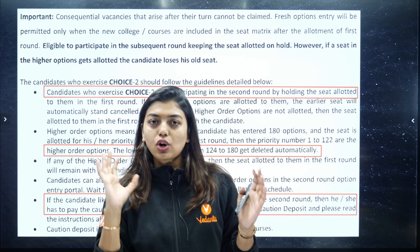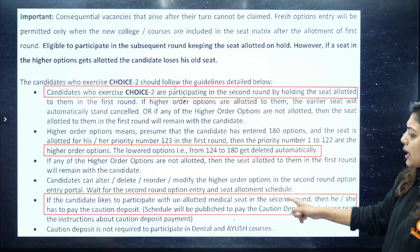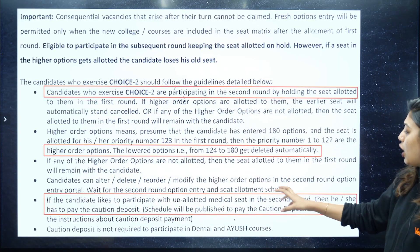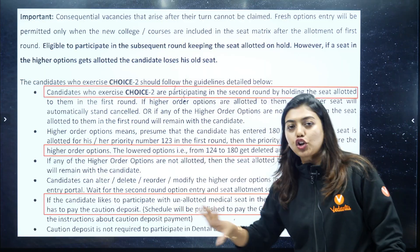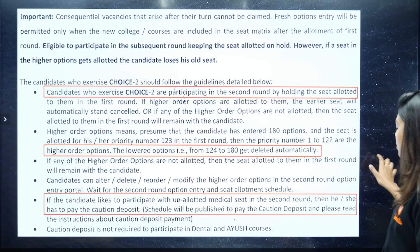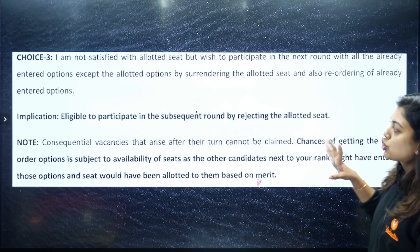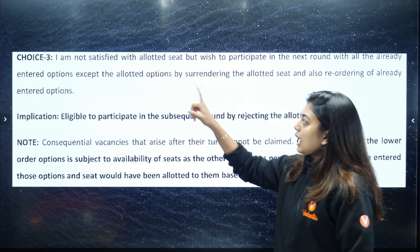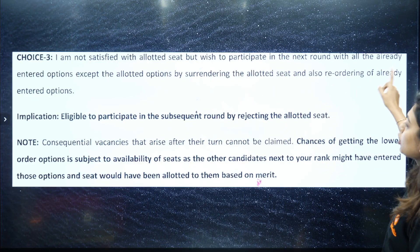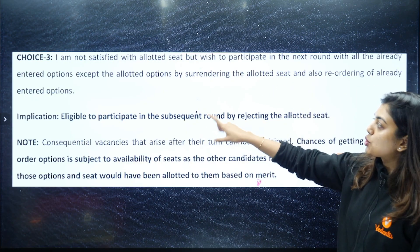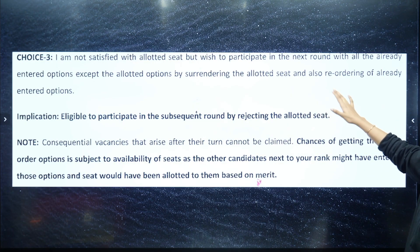Now, if candidates want to participate with an unallotted medical seat in the second round, they have to pay a caution deposit — I'll explain that shortly. First, let me show you Choice 3: 'I am not satisfied with the allotted seat but wish to participate in the next round with all already entered options, except the allotted option, by surrendering the allotted option and reordering.'